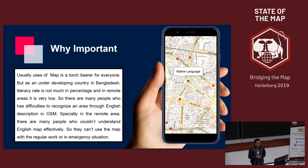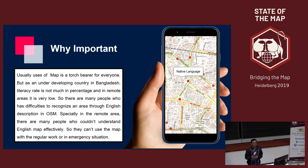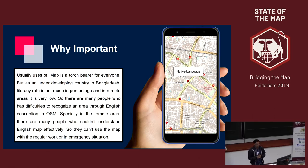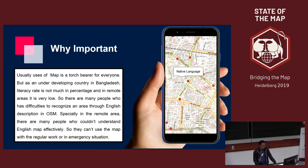Usually users of a map — it is there for everyone. But as an underdeveloping country like Bangladesh, the literacy rate is not high, and in remote areas it is very low. There are many people who have difficulties recognizing an area or English descriptions in OSM. Especially in remote areas, many people didn't understand English or English maps effectively.